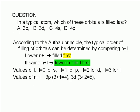Therefore, the values of n plus l are 3 plus 1 or 4 for the 3p orbital, 3 plus 2 or 5 for the 3d orbital, 4 plus 0 or 4 for the 4s orbital, and 4 plus 1 or 5 for the 4p orbital.